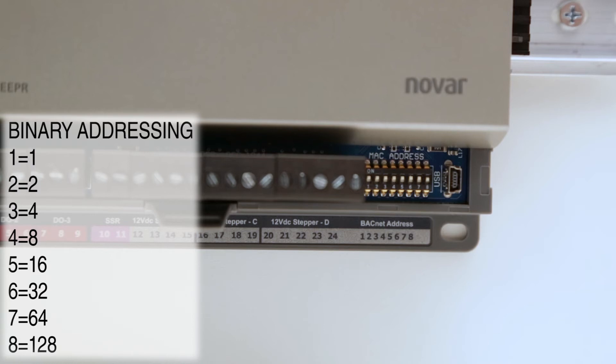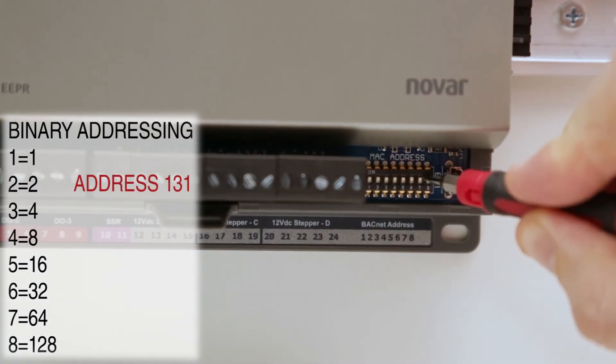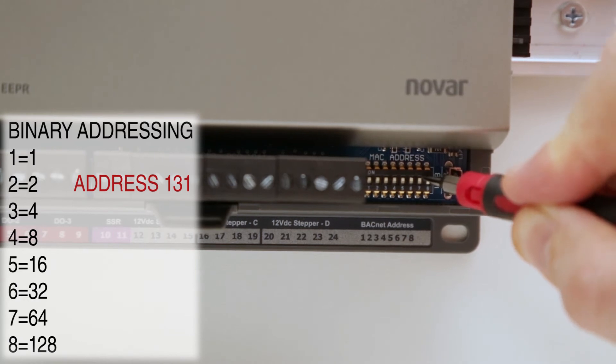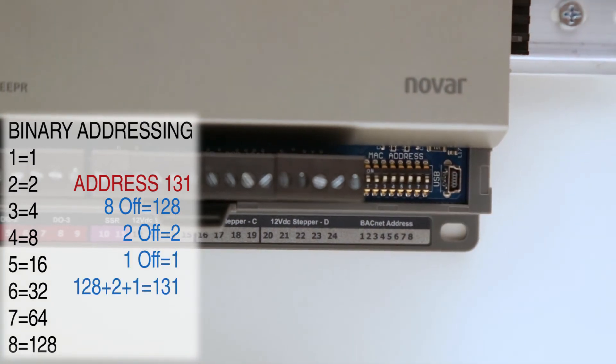In this instance, an address of 131 is used, which is 8 OFF for 128, followed by 2 OFF for 2, and 1 OFF for 1, equaling the value of 131 in the OFF positions.